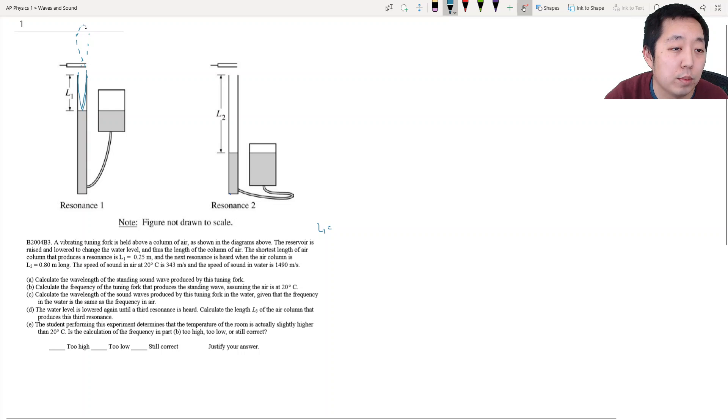Because that would be a whole period. So one quarter of a wavelength. So that means lambda is equal to 4L1. And that would be 4 times L1, which is 4 times 0.25, that's 1 meter. Okay, so that's the wavelength for this first resonance.